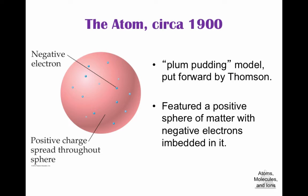As I mentioned when discussing Thompson, the plum pudding model was the first real model of an atom besides Dalton's sphere. Thompson said there have to be electrons in the atom, but they were almost like raisins in bread — or think of a chocolate chip cookie — the electrons are just spread out within a positive sphere. This was the model of the atom around 1900. Thompson discovered the electron; Milliken then determined the charge and mass of a single electron.